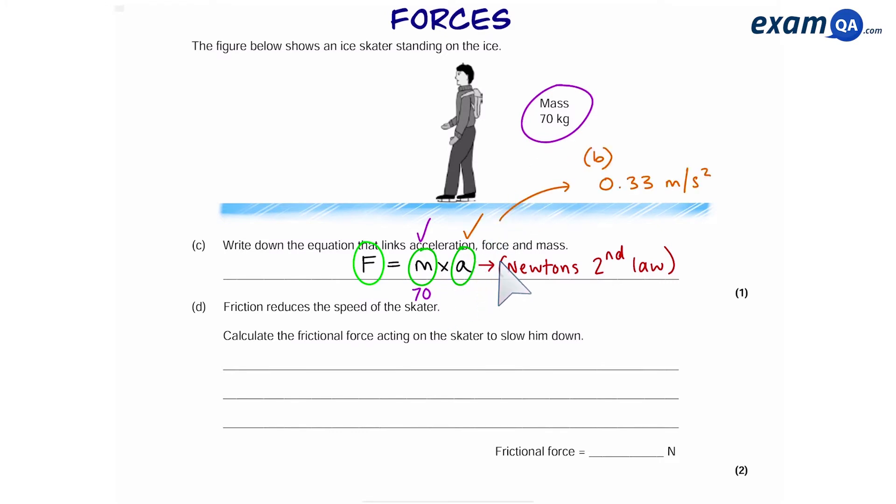As for acceleration, we worked this out in part B. It was 0.33 meters per second squared. So we can put that there and then times them together. So that's one mark. Which gives us 23.1 newtons. There's our second mark.